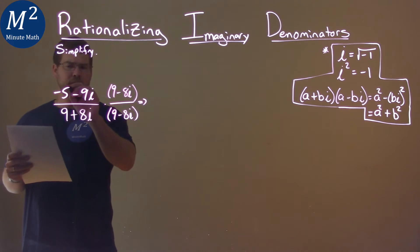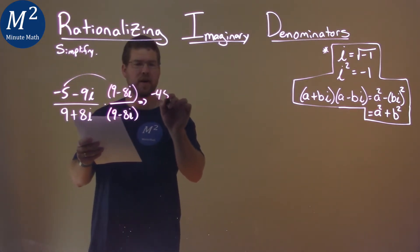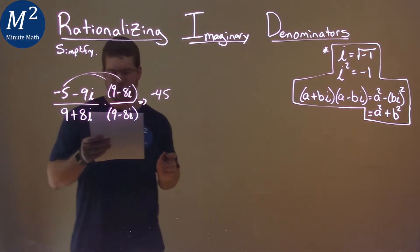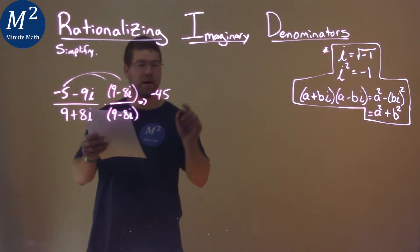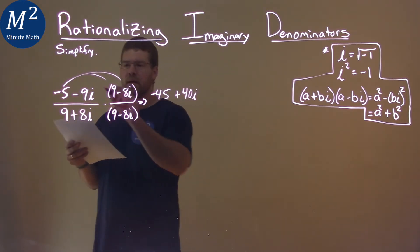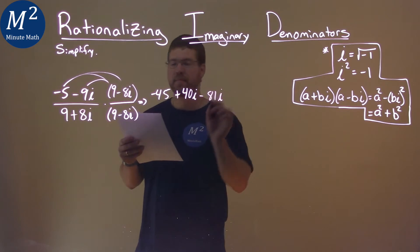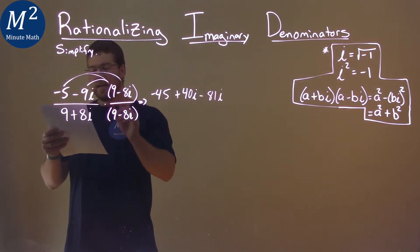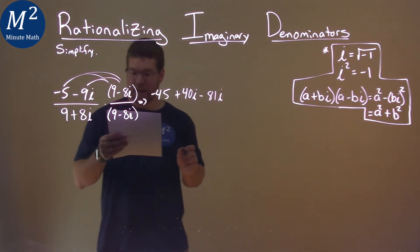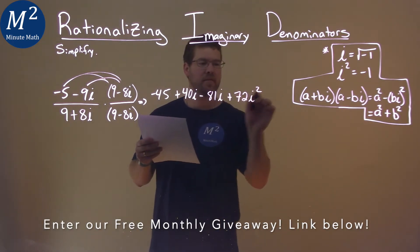Let's do it with the numerator. Negative 5 times 9 is negative 45. Negative 5 times negative 8i is positive 40i. Negative 9i times 9 is negative 81i. And negative 9i times negative 8i is positive 72i squared.